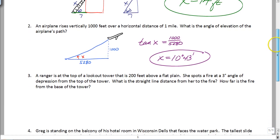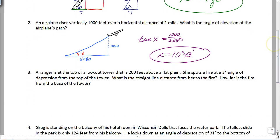Number three, a ranger is at the top of an outlook tower that is 200 feet above a flat plane. She spots a fire at three degree angle of depression from the top of the tower. What is the straight line distance from her to the fire? So this is going to be the diagonal distance. How far is the fire from the base of the tower?